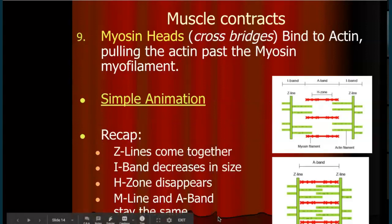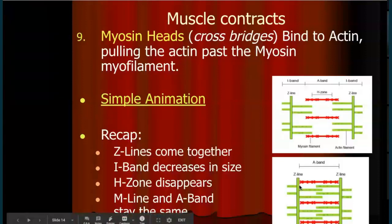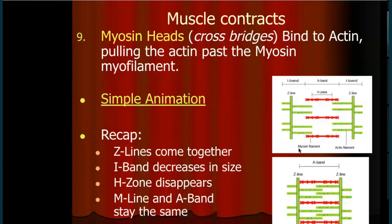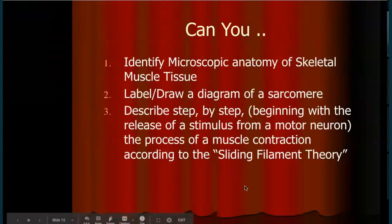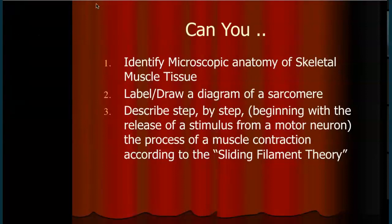You should be able to tell what's happening to each of these — this is a test question. During contraction: the Z lines come closer together; the I band — the amount of non-overlap — decreases; the H zone decreases; the M line stays the same; the A band stays the same; and the length of the filament stays the same.